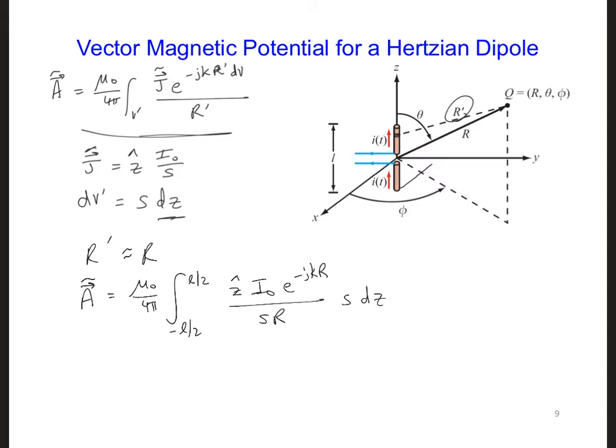So now we can pull out the z hat and actually this whole thing, we can pull this whole thing out because it doesn't change with z and we can cancel the s. Then we have z hat mu-naught over 4 pi i naught e to the minus jk r over r, and we integrate from minus L over 2 to L over 2 just 1 dz.